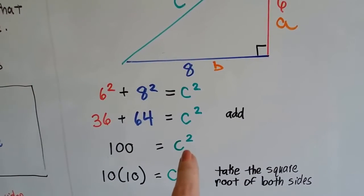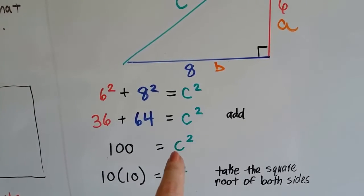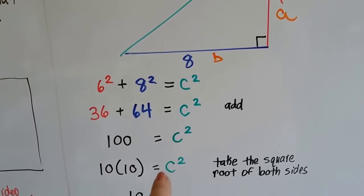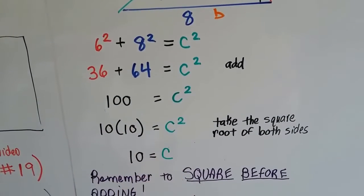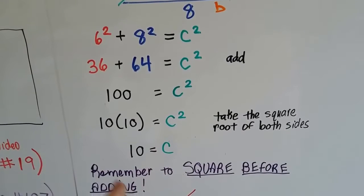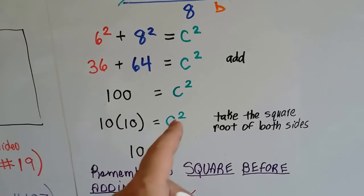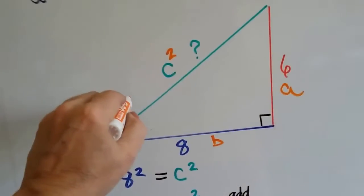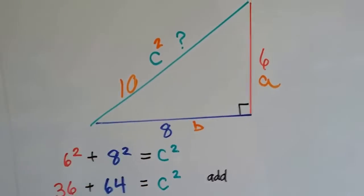We need to unsquare this. We need to take the square root of both sides. What's the square root of 100? 10 times 10. So 10 × 10 = c². We take just one of them to get c, and we know that c is 10. So this side equals 10.